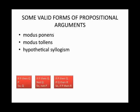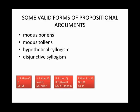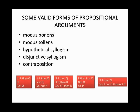Hypothetical syllogism: if P then Q, if Q then R, so if P then R. Disjunctive syllogism: either P or Q, not Q, so P. And contraposition: if P then Q, so if not Q, then not P.